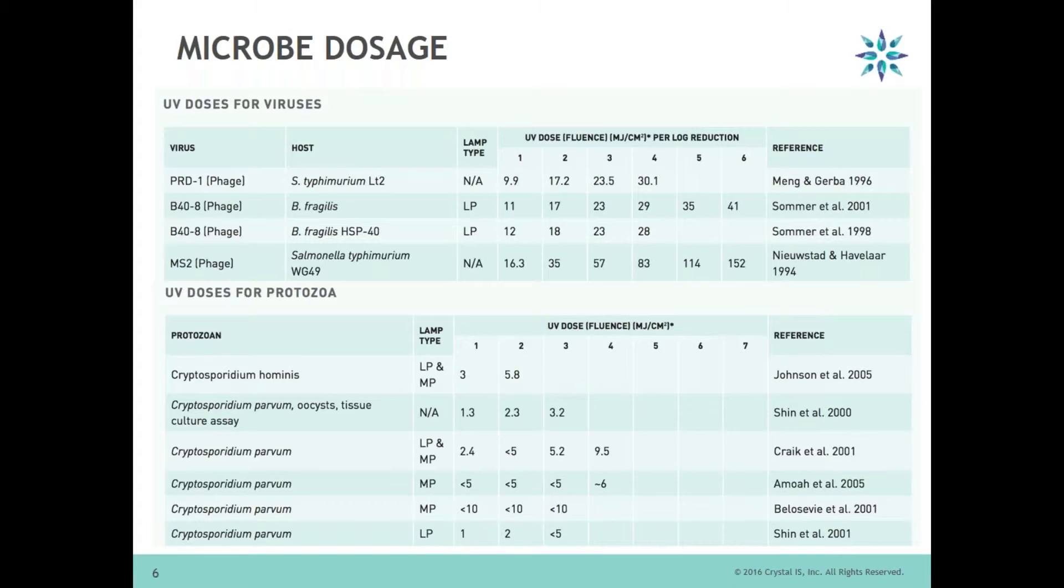So this table shows different dosages required for different microbes. These are examples. It talks about UV dose for viruses, UV dose for protozoa, and then there are different viruses and the host which are present.